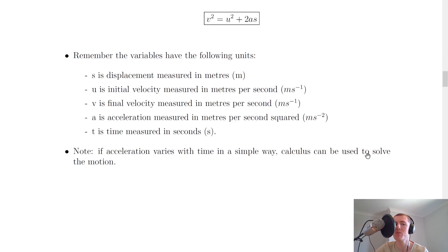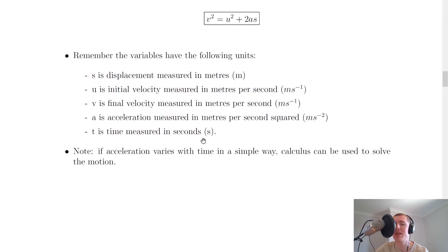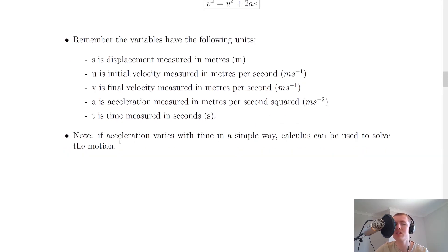For each of the three equations of motion, remember we can use SUVAT to write down what we know when trying problems: s is displacement measured in metres, u is initial velocity in metres per second, v is final velocity in metres per second, a is acceleration in metres per second squared, and t is time in seconds. Lastly, if acceleration varies with time in a simple way, calculus can be used to solve the motion, so make sure you can differentiate and integrate expressions of acceleration as functions of time.